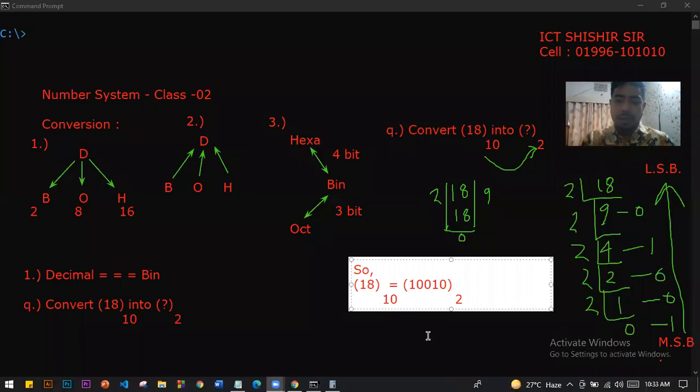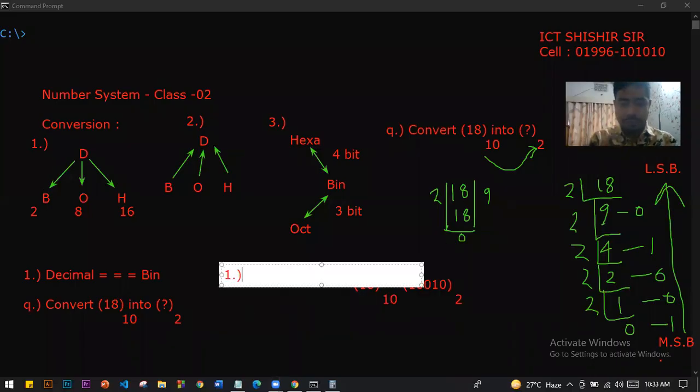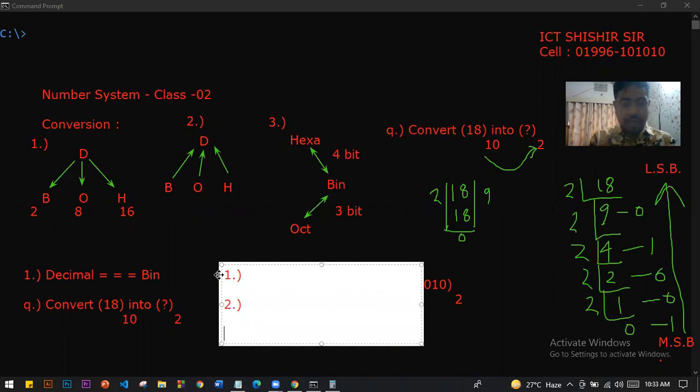We can write the message, we can write the group. We can convert the group - 3 bits, 3 bits, 3 bits. Simple.